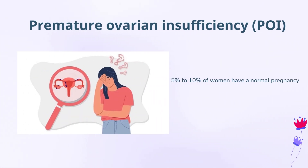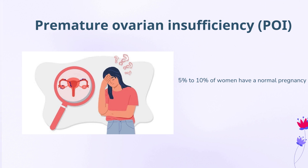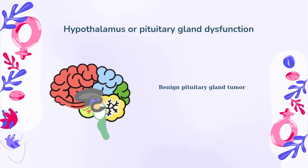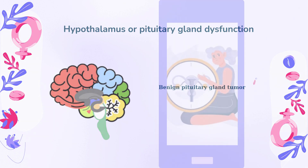Some medical conditions and exposures can cause POI, but for many women the cause is unexplained. About 5% to 10% of women with POI will conceive naturally and have a normal pregnancy. Hypothalamus or pituitary gland dysfunction — these glands produce hormones that are responsible for ovulation. Anything that interferes with the normal function of these glands, such as a benign pituitary gland tumor, can cause anovulation.